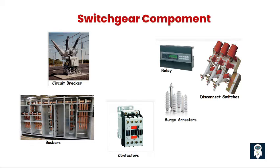The components of switchgear include: 1. Circuit breakers — devices that interrupt the flow of electrical current, designed to protect electrical equipment from overcurrents, short circuits, and other electrical faults. 2. Disconnectors — used to isolate parts of the electrical system for maintenance or repair, typically used in conjunction with circuit breakers and other protective devices. 3. Fuses — devices that protect electrical equipment by interrupting current flow when it exceeds a certain level, guarding against overcurrents and short circuits. 4. Relays — devices that monitor the electrical system and activate protective devices when necessary, detecting faults to ensure safe and reliable operation.